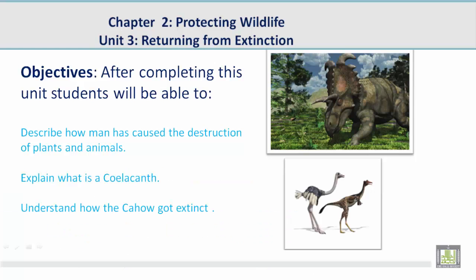Objectives. After completing this unit, students will be able to: describe how man has caused the destruction of plants and animals, explain what a coelacanth is, and understand how the Cahow became extinct.